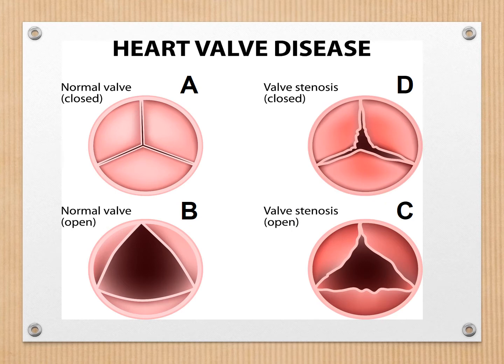Diseased valves can affect the flow of blood through the heart. There are two main types of valve problems. Image A shows a normal aortic valve closed tightly, and Image B shows a normal aortic valve opened wide. The normal valve closes well and opens wide to allow good blood flow. Images C and D show a diseased aortic valve. Stenosis means a valve that has become stiff; the stenosed valve is unable to open as wide as it should, obstructing blood flow. Image D shows a closed diseased valve that does not close properly, causing blood to leak backwards. This is called regurgitation, also referred to as a leaky valve.